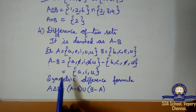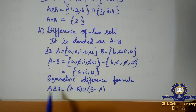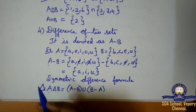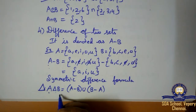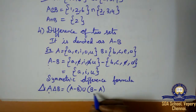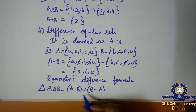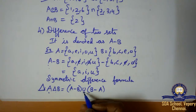Next is the symmetric difference formula. If the question asks to find the symmetric difference for two sets, for example A symmetric B, the formula is: A symmetric B equals (A minus B) union (B minus A). First find A minus B, then B minus A, then combine them using union.